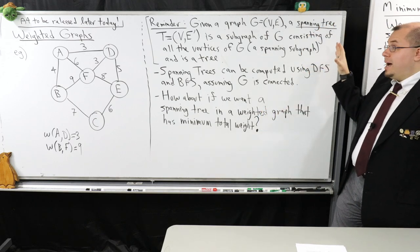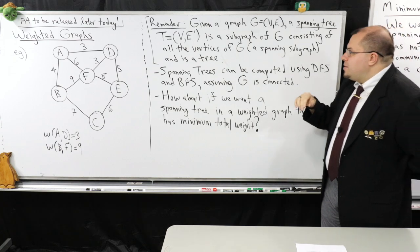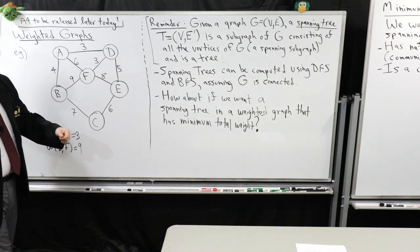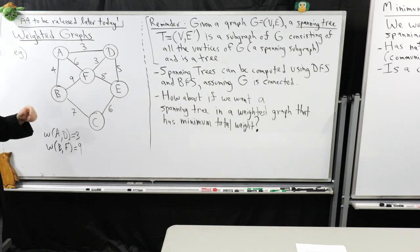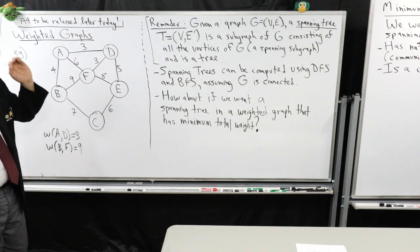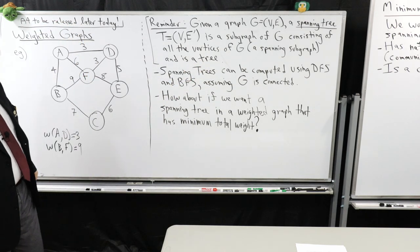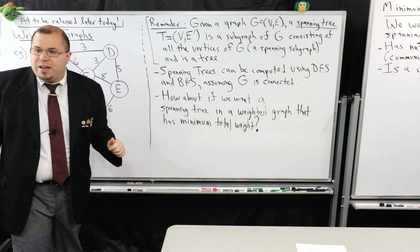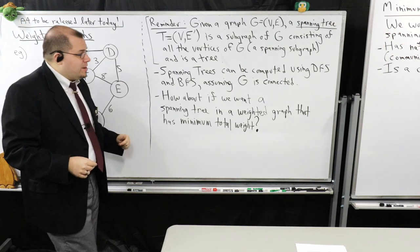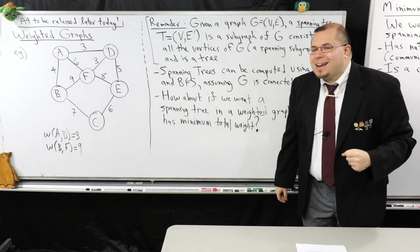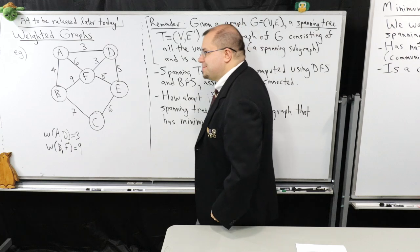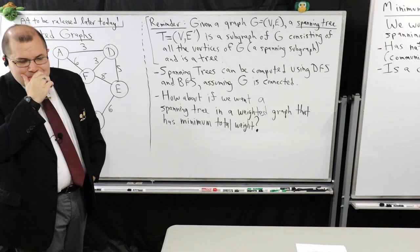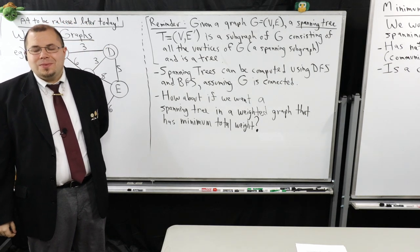I want to remind you of something I said the other day: the notion of a spanning tree. If I give you some graph G, a spanning tree T is a subgraph of G. It consists of all of the vertices of G — that's what we call a spanning subgraph — but it has to be a tree. Spanning trees can be computed using DFS or BFS. Can anybody tell me how I can get a spanning tree assuming the graph G is connected?